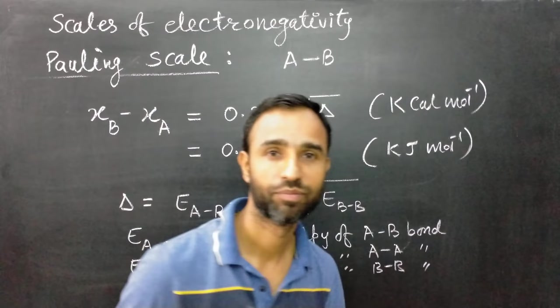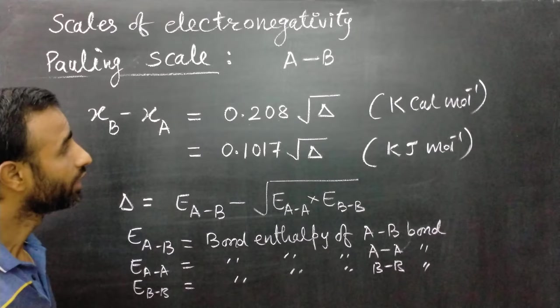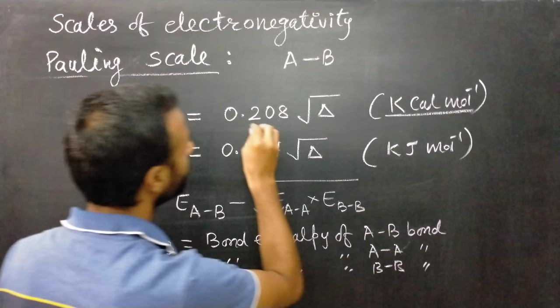This is about the Pauling scale. If bond enthalpies are measured in kilocalories per mole, then the difference in electronegativity is multiplied by 0.208.